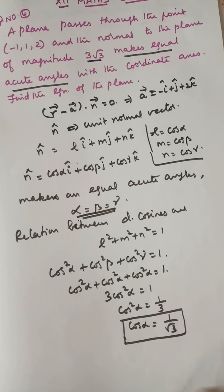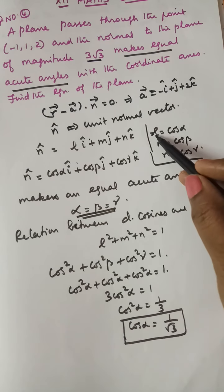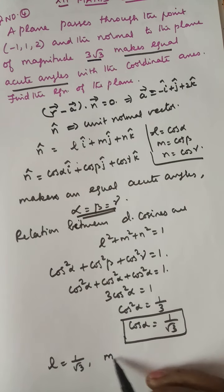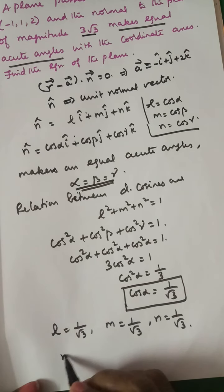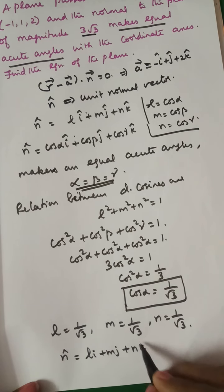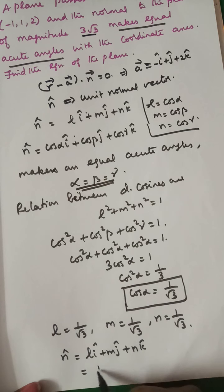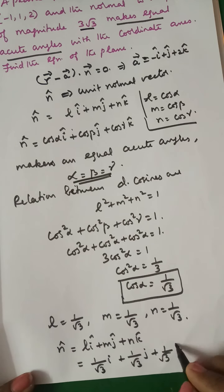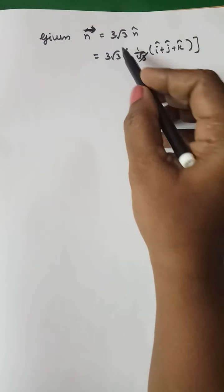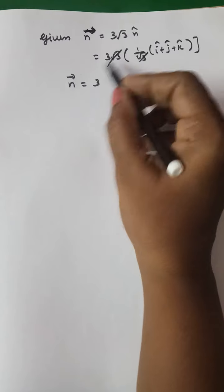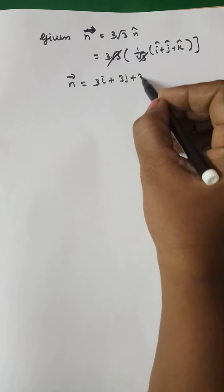So cosα = 1/√3. Therefore L = 1/√3, M = 1/√3, and N = 1/√3. Thus N̂ = (1/√3)î + (1/√3)ĵ + (1/√3)k̂. Given that the magnitude of N vector is 3√3, N vector = 3√3 × N̂. The √3 cancels, giving N vector = 3î + 3ĵ + 3k̂.